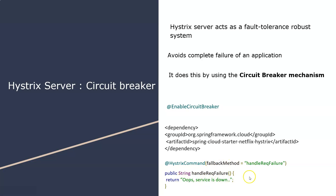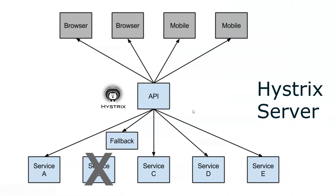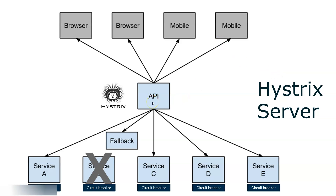For example, you have your web service with Hystrix embedded. Each web service has a circuit breaker — meaning a @HystrixCommand and a fallback method for each service. If a microservice is down, Hystrix knows about it, invokes the fallback method, and returns the response to the client instead of propagating the failure.